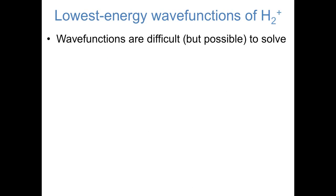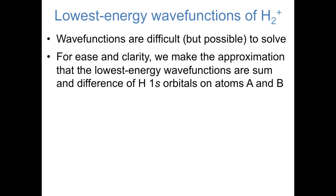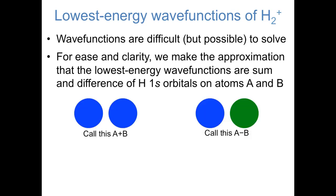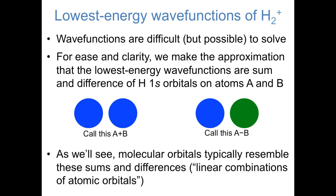It turns out to be difficult but possible to exactly solve for the wave functions of H2+. But rather than solving for these wave functions exactly, we're going to make an approximation that the lowest energy wave functions in H2+ are a sum and a difference of hydrogen 1s orbitals on atoms A and B. So one of these molecular orbitals has the form A plus B shown on the left, and the other has the form A minus B shown on the right. And while this isn't actually the mathematical form of the molecular orbitals in H2+, it is very close to it. Molecular orbitals do generally resemble these sorts of sums and differences of atomic orbitals, also called linear combinations of atomic orbitals. So it's instructive for us to assume that these are the molecular orbitals and to see what comes out of it.